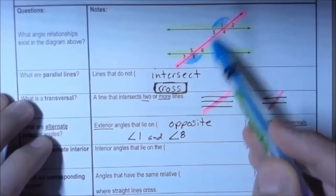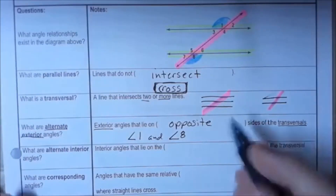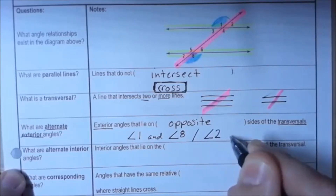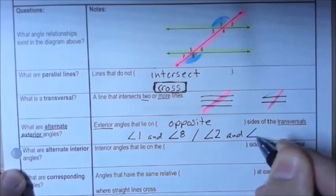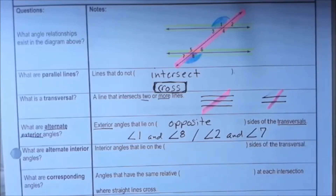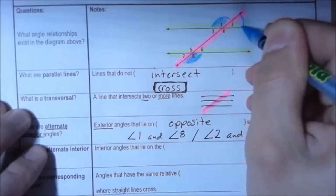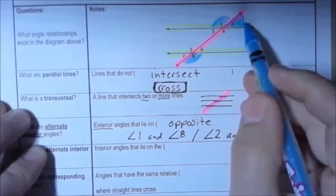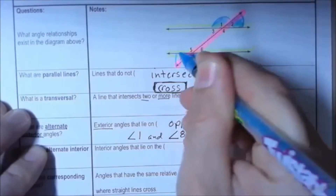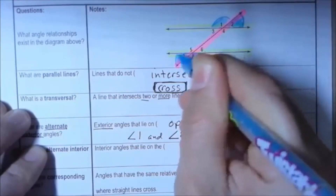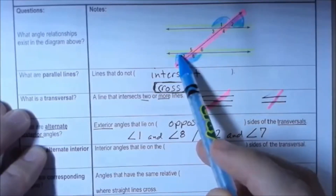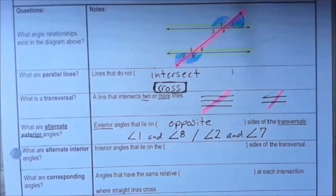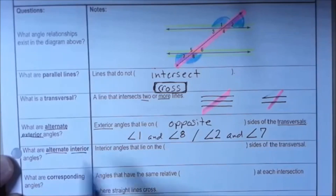Another set of alternate exterior angles would be angle two and angle seven. Angle two is on the right side and angle seven is on the left side. So two and seven are alternate exterior angles, and one and eight are alternate exterior angles.